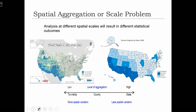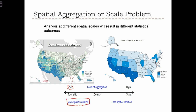On the right-hand side, we have the percent Hispanic at the state level of aggregation. When you have a lower level of aggregation — meaning smaller spatial units, counties in this case — we can observe a finer degree of spatial resolution, or in other words, we see more spatial variation.